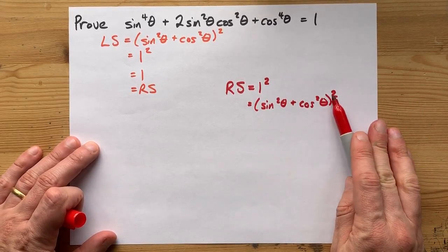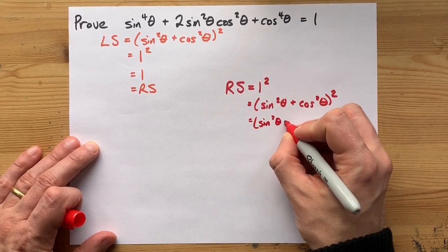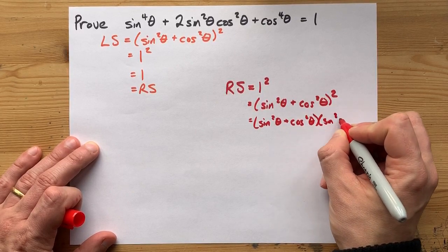But in order to deal with this squared, you actually have to write it out twice and foil it. The reason I'm showing you this is some kids are more comfortable with this foiling.